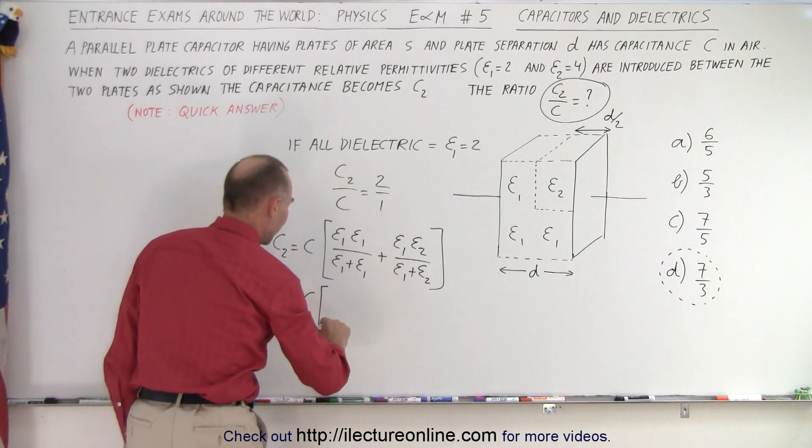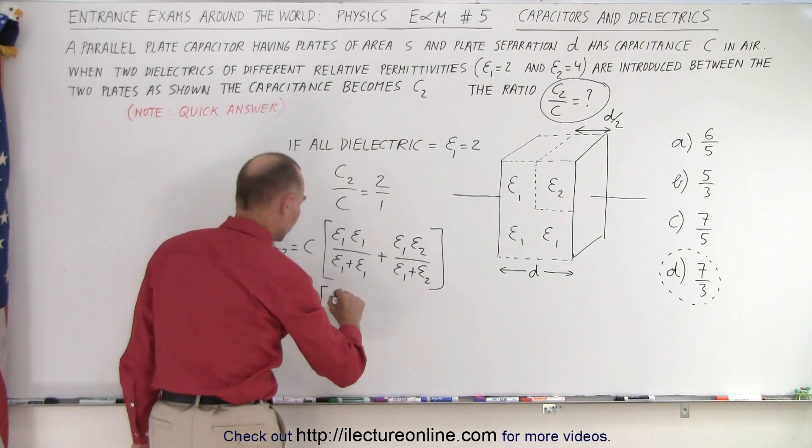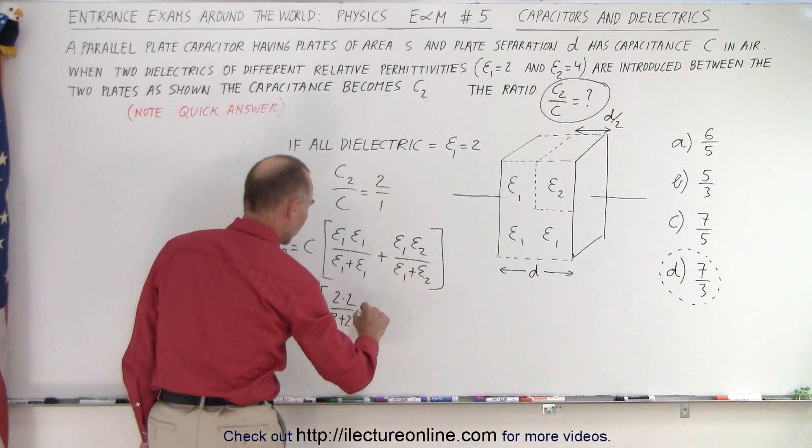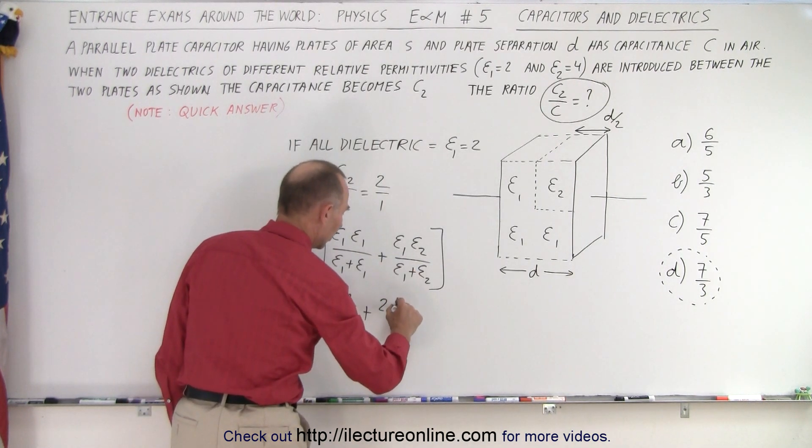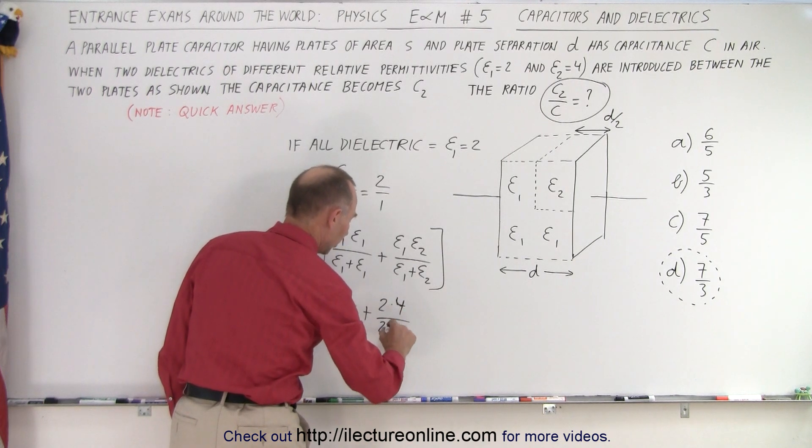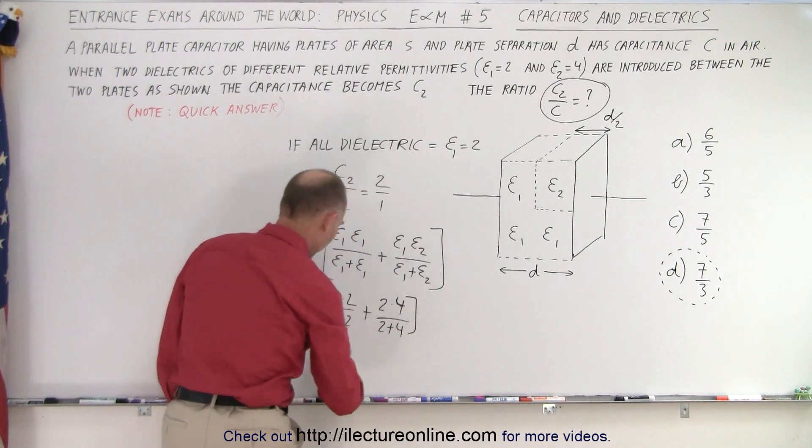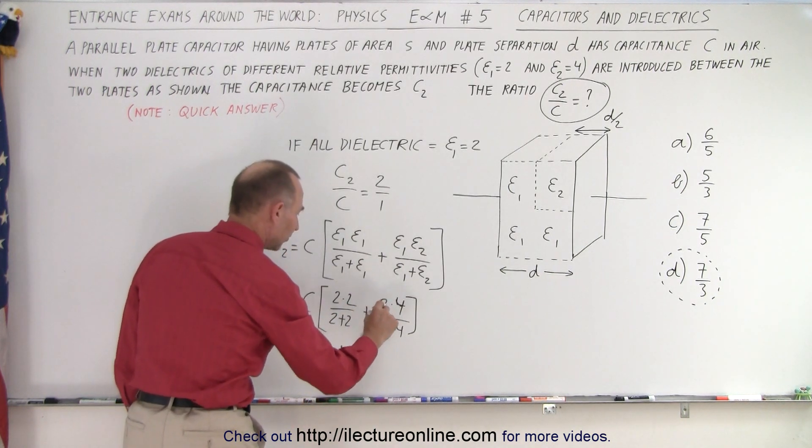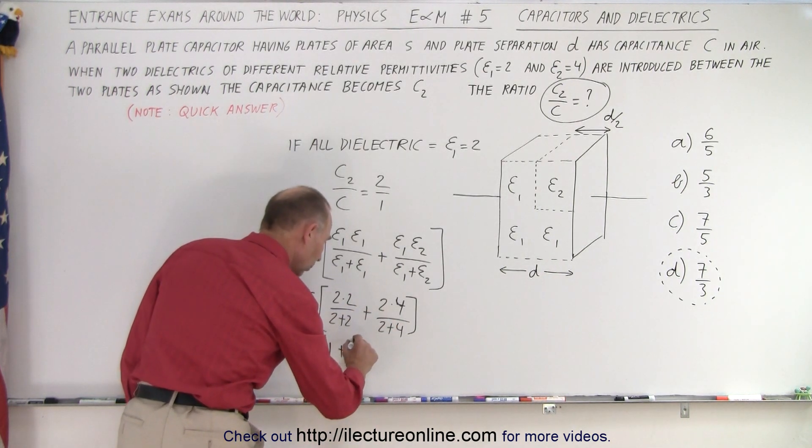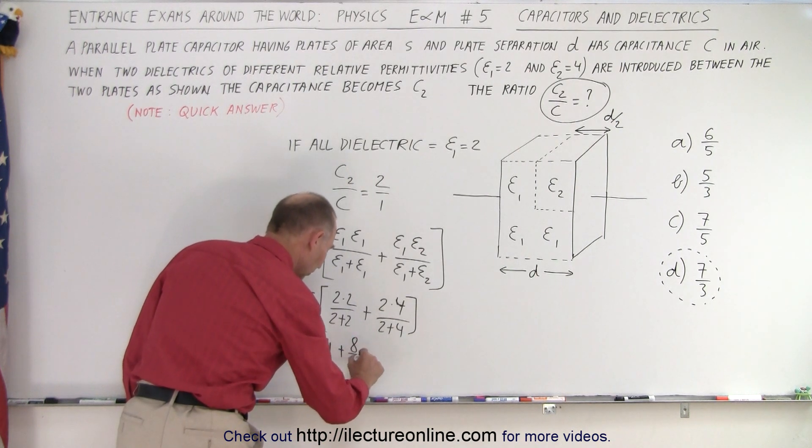C times e1 times e1, which is 2 times 2 over 2 plus 2, plus e1 times e2, which is 2 times 4 over 2 plus 4. So that would be equal to c times 4 over 4, which is 1, plus 8 over 6.